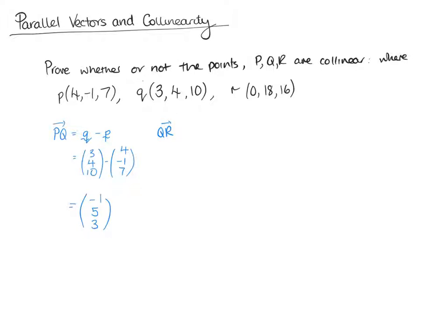Then we have QR, which is R take away Q: (0, 18, 16) minus (3, 4, 10). So we've got 0 minus 3 which is -3. It's looking like it could be something, but we can't tell for certain. Then 18 take away 4 gives us 14. Something's gone wrong — well, not necessarily. Then 16 take away 10 which is 6. So QR = (-3, 14, 6). You can see there is no multiple we can pick that will make these parallel, because the second one would need to be (-3, 15, 9) to be a multiple of PQ.